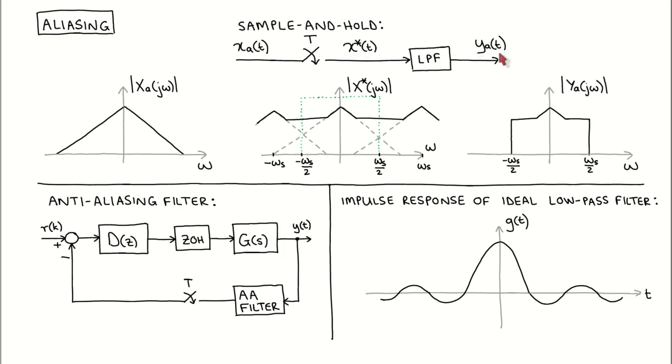Suppose the frequency spectrum of the input signal is given by this plot. If the frequency components in the input signal exceeds the Nyquist frequency, or half the sampling frequency, then the sampled spectrum will look something like what is shown here, where we can see that the analog spectrum repeated at integer multiples of the sampling frequency overlap in the sampled spectrum.